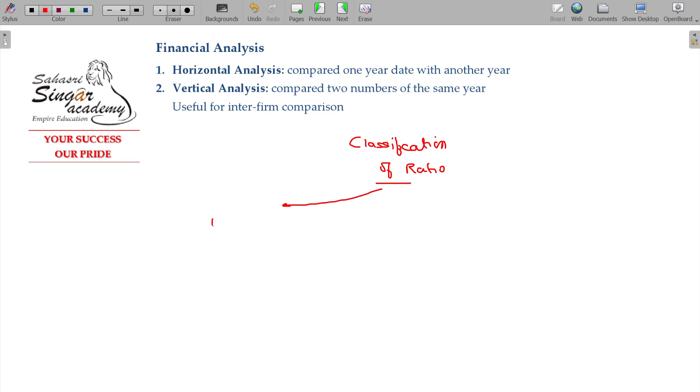One is profitability ratios. Second one is activity ratios, whether the business is active or not. Third one is liquidity ratios or solvency ratios. Another one is coverage ratios - how much bigger commitment like loan commitment, interest commitment. And the last one being market value ratios.